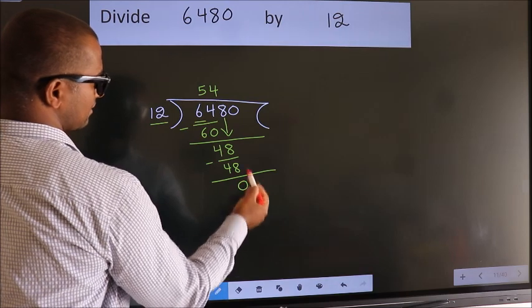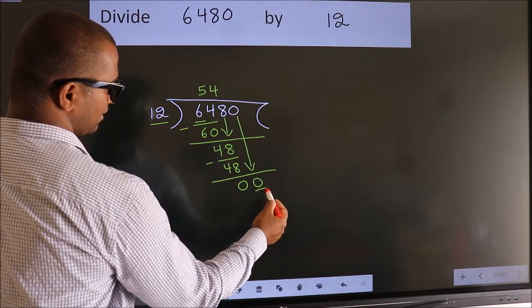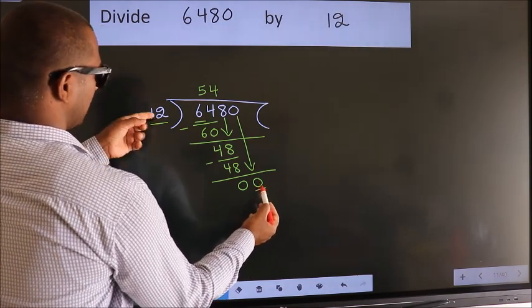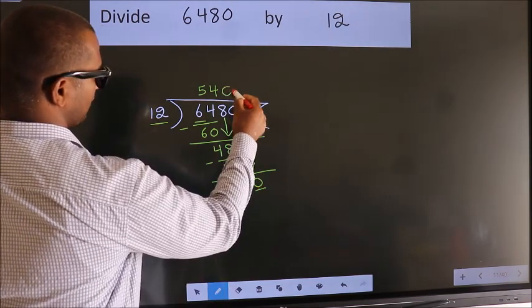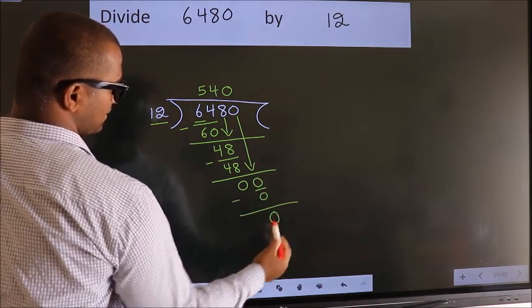After this, bring down the beside number. So, 0 down. When do we get 0 in the 12 table? 12 zeros, 0. Now we subtract. We get 0.